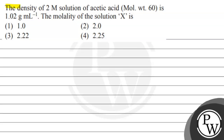Let's read this question. The density of a 2 molar solution of acetic acid, molecular weight 60, is 1.02 gram per milliliter. The molality of the solution X is — and the options given are 1.0, 2.0, 2.22, and 2.25.